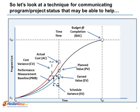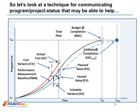Using variance and some indexes, one can estimate duration to complete and arrive at a value for estimate at completion for time or duration. Graphically, the way to think about estimate at completion for time is the point in time when earned value equals the budget at completion.